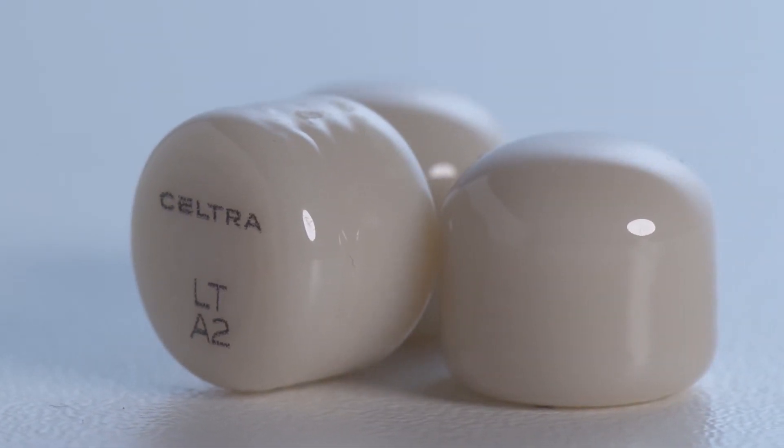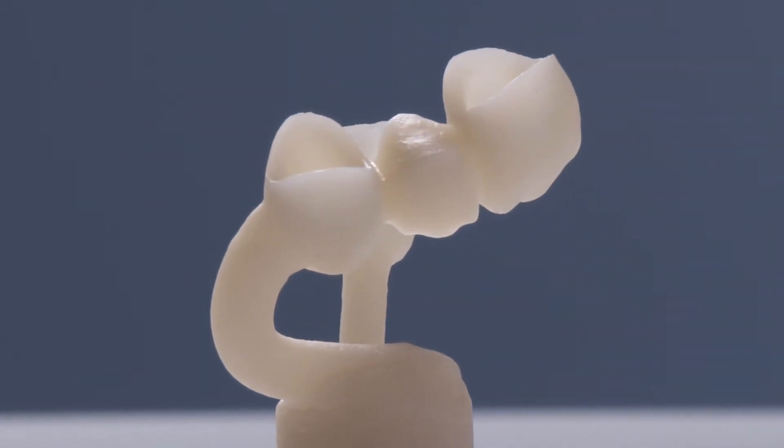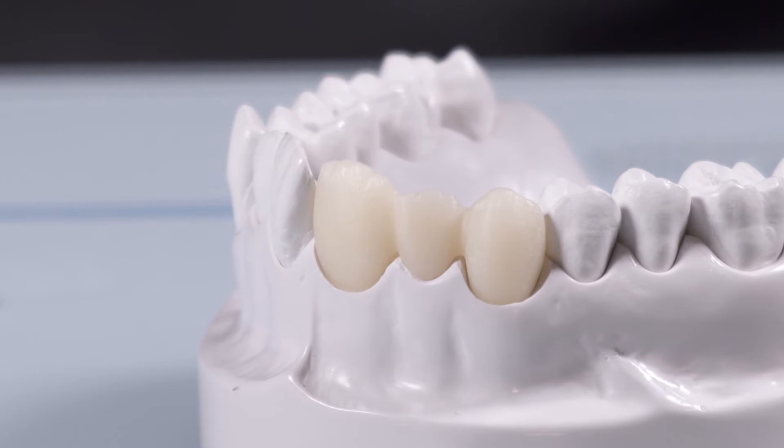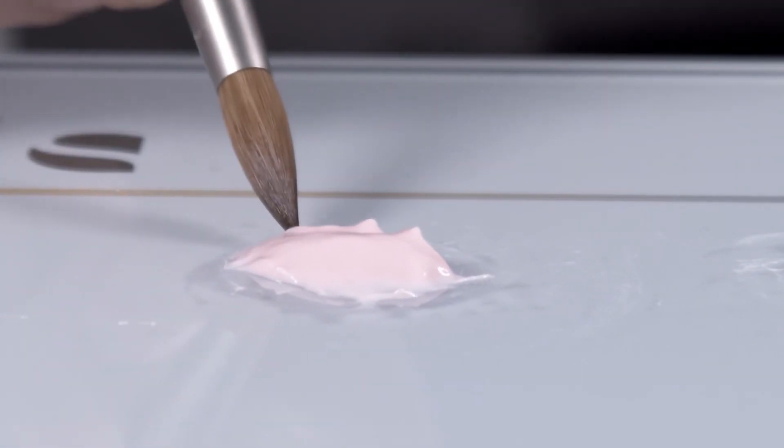In the fully veneered version, Seltra Press offers unlimited top-notch aesthetics. The framework has been designed to reflect the reduced anatomical shape of the restoration. Build up the upper part of the crown with Seltra Ceram Dentin A2 and create delicate mamlon structures.